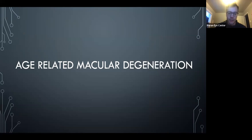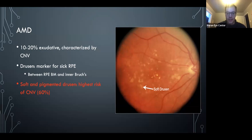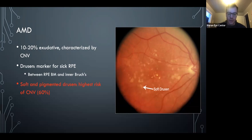Moving on from trauma, just a couple of slides on AMD. Population-based, only about 10–20% of people have wet AMD. Drusen are markers of unhealthy RPE, but you do see drusen in normal retinas — occasional small drusen doesn't count as AMD, that's just regular aging. Usually they're between the RPE and Bruch's membrane.